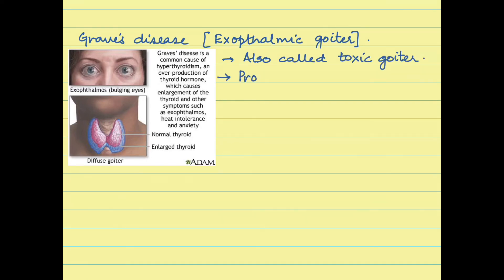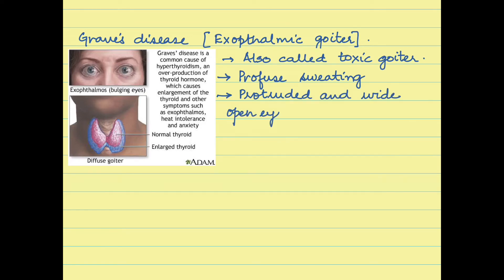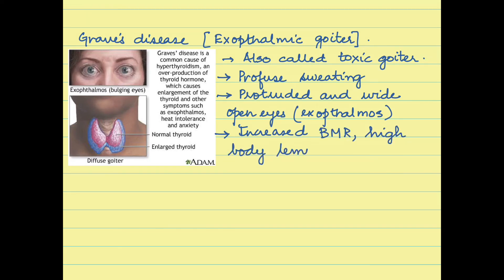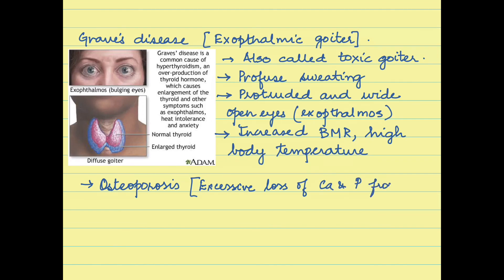The disorder associated with hyperthyroidism is Graves' disease, also called exophthalmic goiter — a toxic goiter. Conditions include profuse sweating, protruded and wide open eyes called exophthalmos, and increased BMR, which also elevates body temperature. Apart from this, the person suffers from osteoporosis, that is weak bones, due to excessive loss of calcium and phosphorus from the bones.